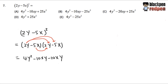We take negative 5x times negative 5x, using the arrow to keep track. Negative 5 times negative 5 is positive 25, and x times x is x squared. Now we are done — we have made sure everything is multiplied with every term the right way.